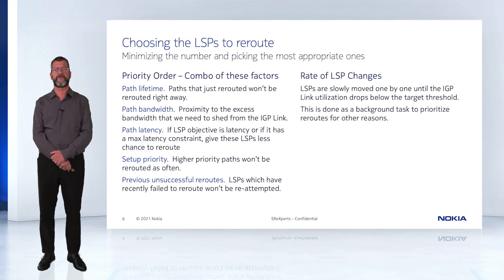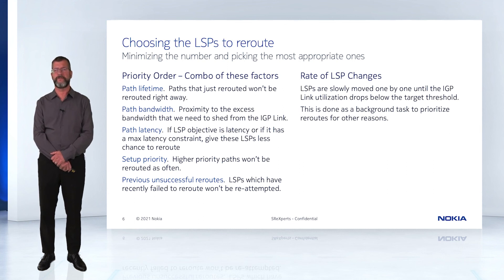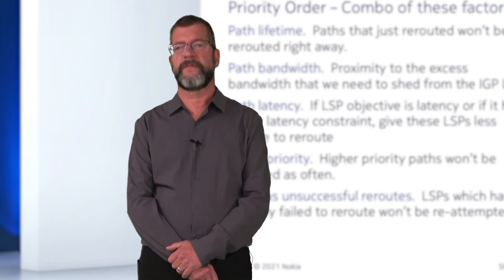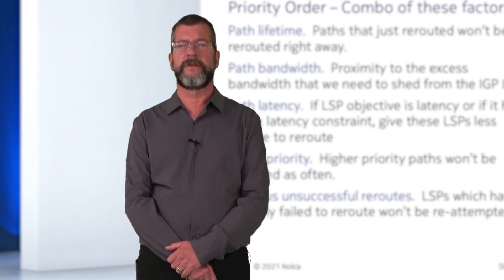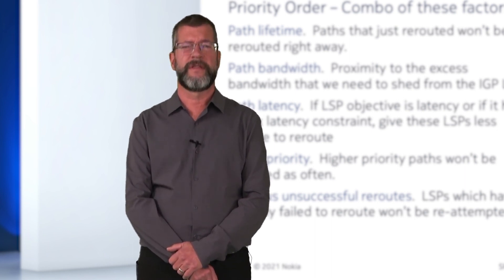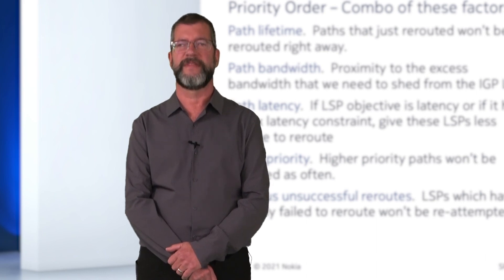The fourth technique is to control the rate of LSP changes. We deliberately try to slowly move traffic away by moving LSPs one at a time until we can measure the link utilization drop. This is done as a background process to make sure high priority reroutes, due to link failures, take precedence. All of these techniques combine to provide you with a stable closed-loop control system that optimizes the network in real time. Thank you.